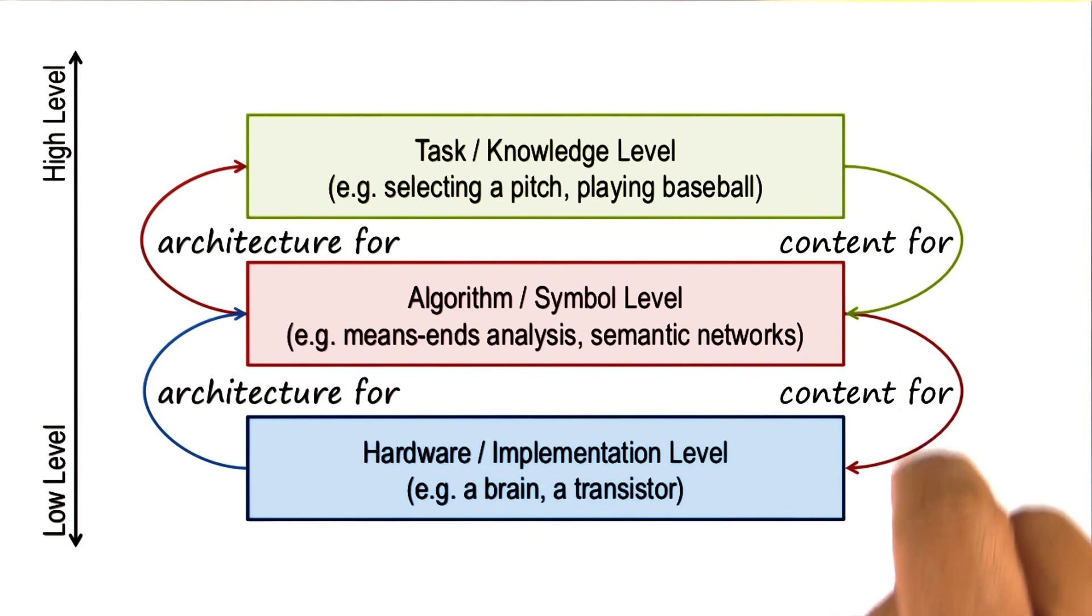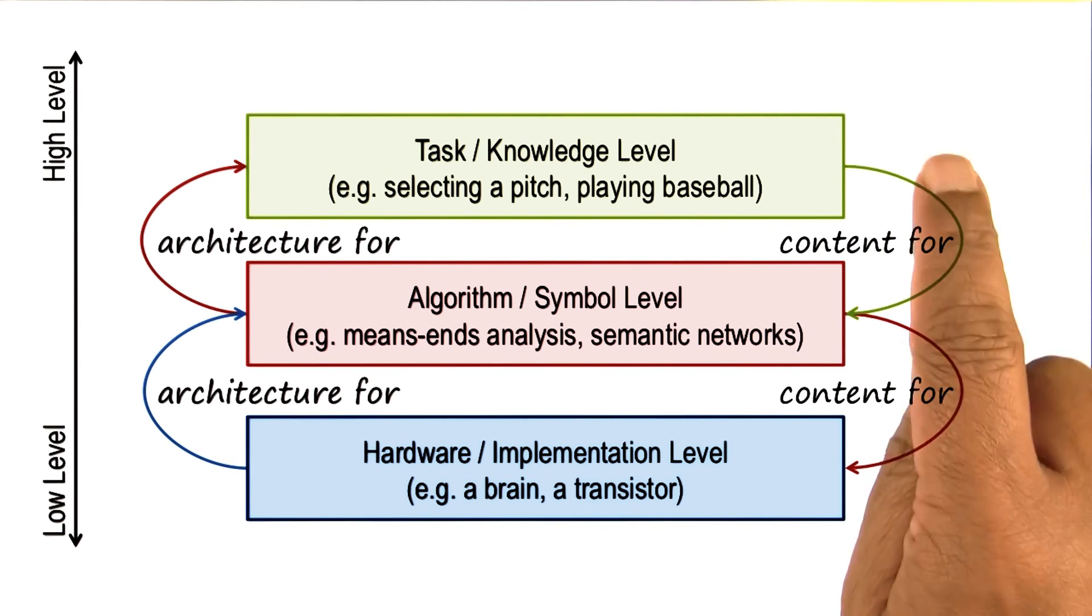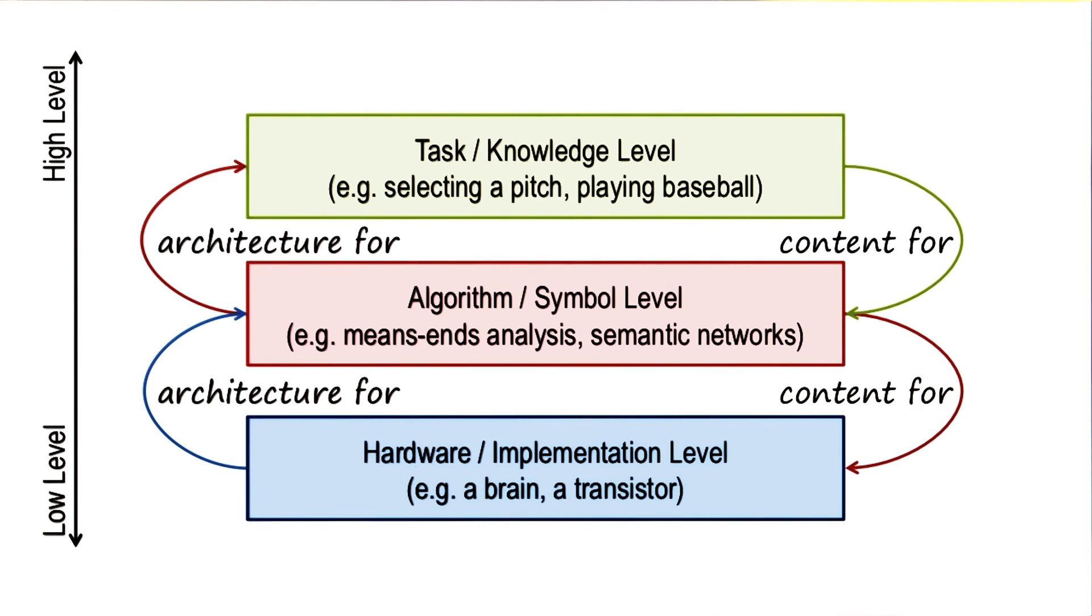Are these different layers also meaningful for analyzing what happens in cognitive systems, whether they are natural or artificial? And at what layer should we be building a theory?